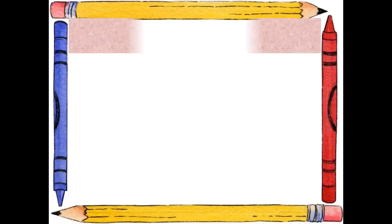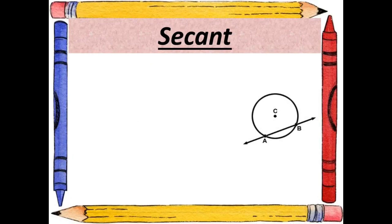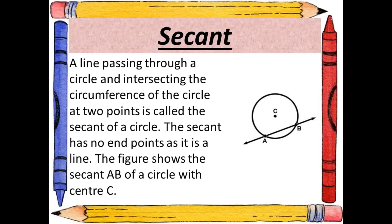A secant is a line passing through a circle and intersecting the circumference at two points. The secant has no endpoints as it is a line. The figure shows the secant AB of a circle with center C.